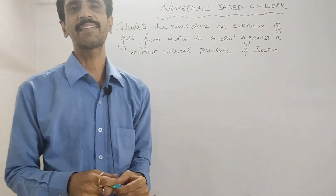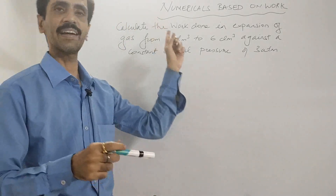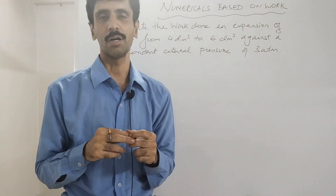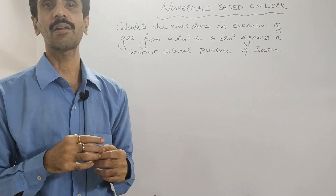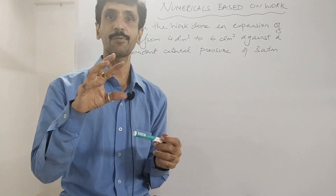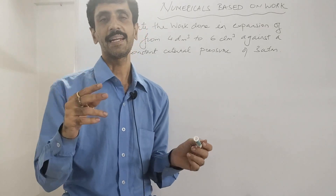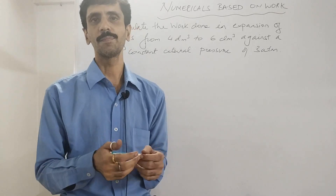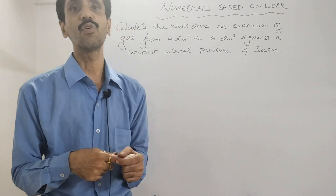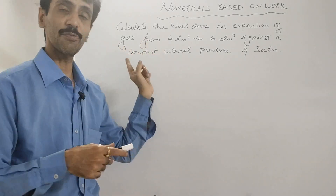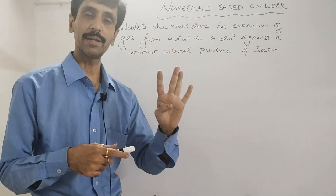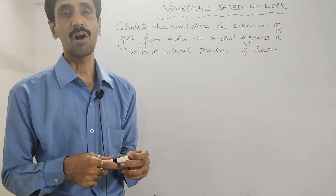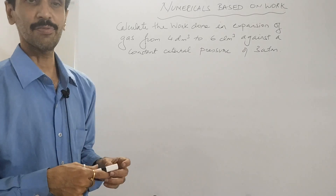Hello everyone, welcome to this session. In this session we are going to discuss numericals based on work. The first numerical is: calculate the work done in the expansion of a gas from 4 dm³ to 6 dm³ against a constant external pressure of three atmospheres.